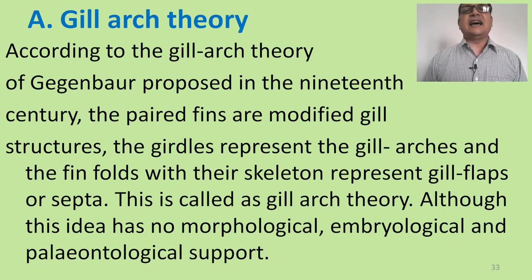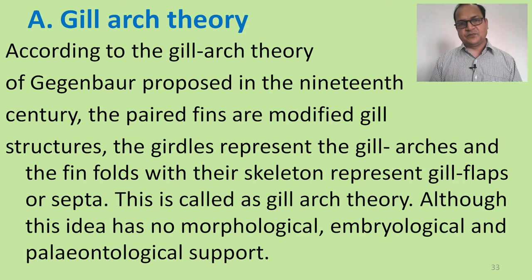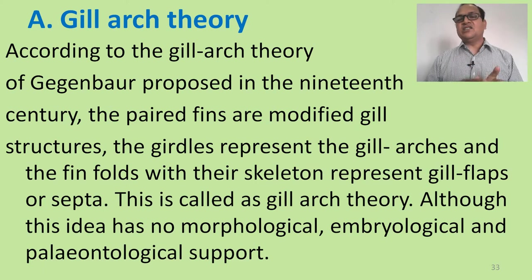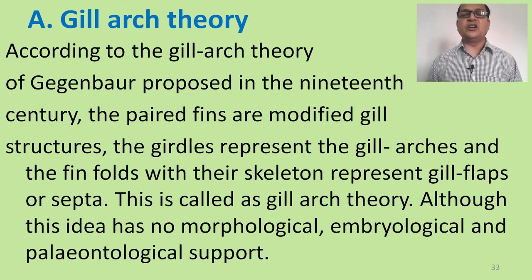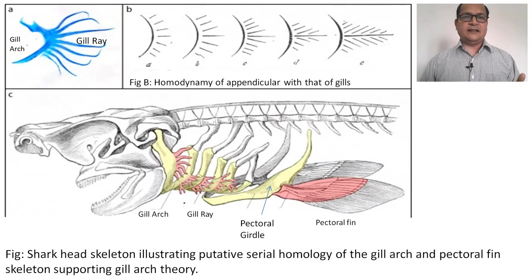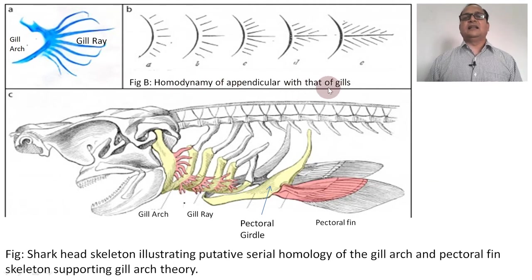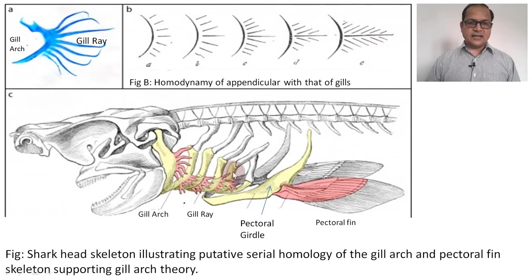First, gill arch theory. According to the gill arch theory proposed by Gegenbaur in the 19th century, the paired fins are modified gill structures — fins originated from the gills. This theory states that the girdles represent the gill arches and the fin fold with their skeleton represent the gill flaps or septa. Although this idea has no morphological, embryological, or paleontological support. This figure shows the homodynamics of appendicular with the gills, and how a gill is slowly modified into a fin, with the gill arch turning into the pectoral fin.